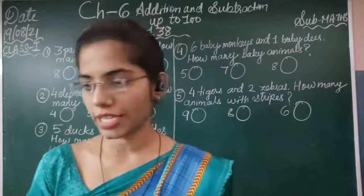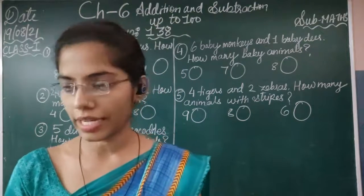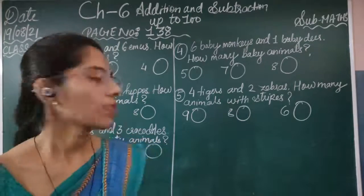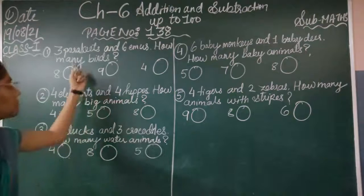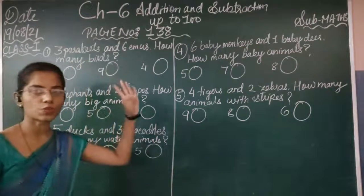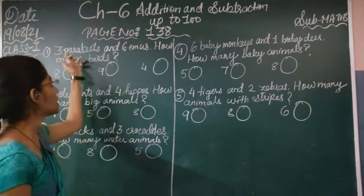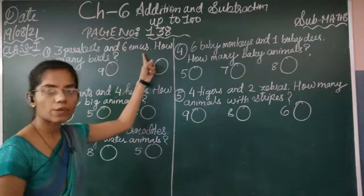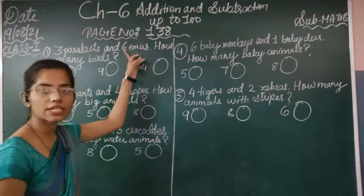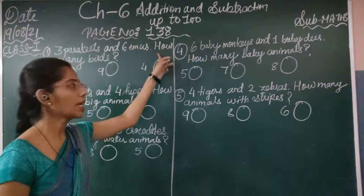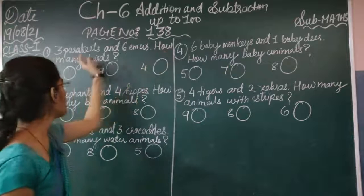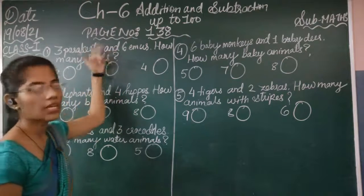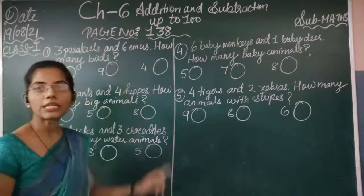The first question is: they saw 3 parakeets and 6 emus. How many birds in total? These are birds. So first, they saw 3 parakeets, and 6 emus. The question asks you: how many birds are there in total?